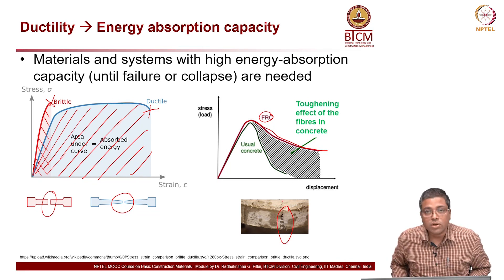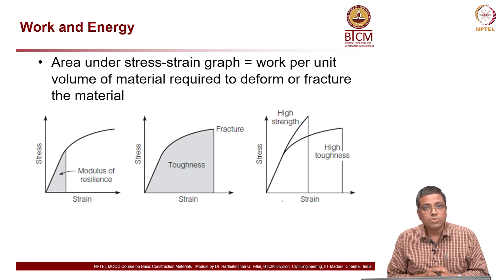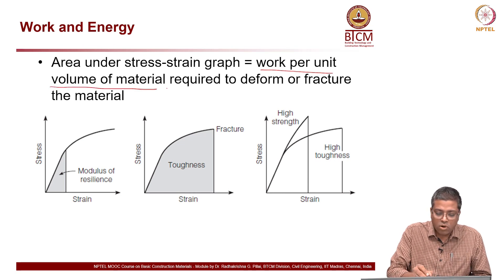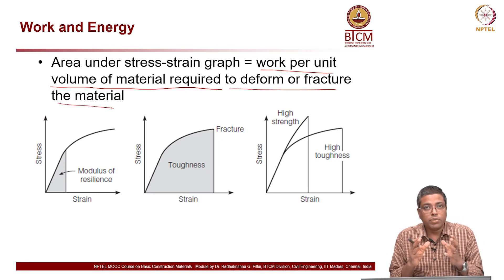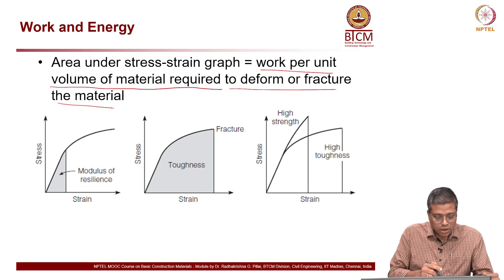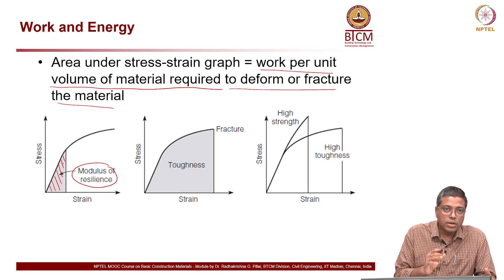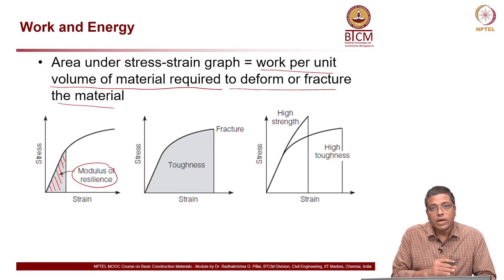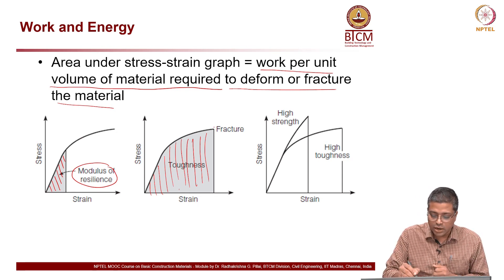The area under the stress-strain graph essentially represents the work per unit volume of material required to deform or fracture it. The modulus of resilience is the area under the curve until the yield point, in the elastic region. When we also consider the plastic region — including plastic deformation until fracture — that area under the curve is called the toughness of the material.